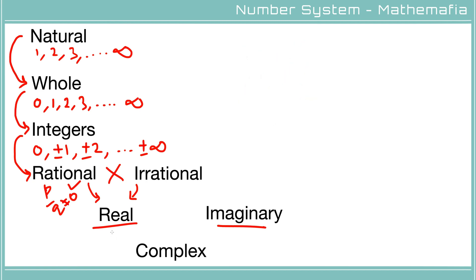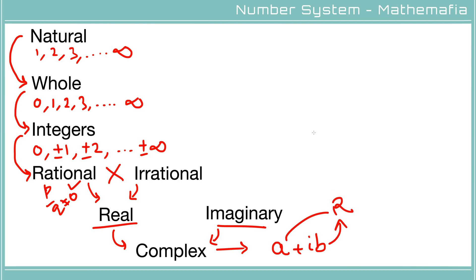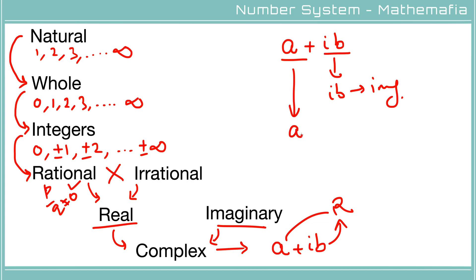Every real number is a complex number and every imaginary number is also a complex number. A complex number is of the form a + ib, where a is the real part and ib is the imaginary part, and both a and b are real numbers. If a is zero, the value is purely imaginary (ib); if b is zero, the value is purely real (a). So every real number and every imaginary number is actually a complex number.